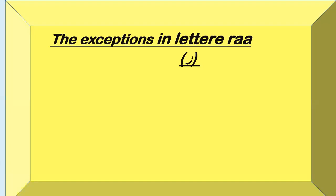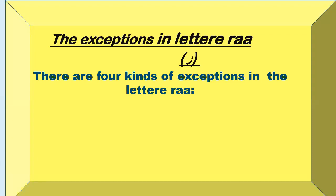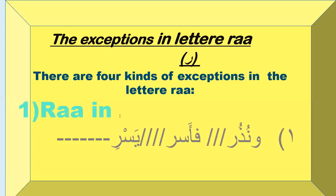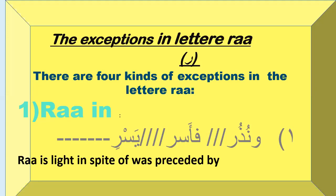Now we will recognize the exceptions for the letter Ra. There are four kinds of exceptions. First: Ra in 'Wanuzr', 'Fa Asr', and 'Yesri' — when we stop on these words, Ra has Sukun and is preceded by a letter with Dhamma, which would normally make it heavy. But this is an exception — Ra is light: 'Wanuzr', 'Fa Asr', 'Yesri'.